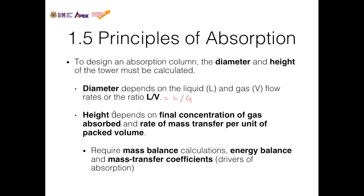The height depends on the final concentration of gas absorbed, or how much of the gas needs to be removed before it exits the column — because the higher the height, the more gas can be absorbed. You also need to look at how fast mass transfer occurs. If the rate of mass transfer is slow, the column must be taller to accommodate it. If the mass transfer rate is high, the height can be lower. Keep in mind that height is proportional to cost because the bigger the column, the more expensive it becomes.